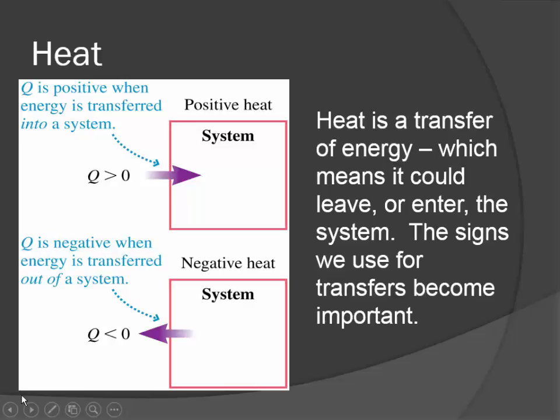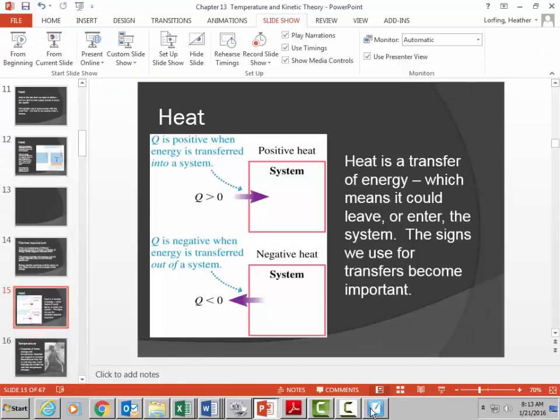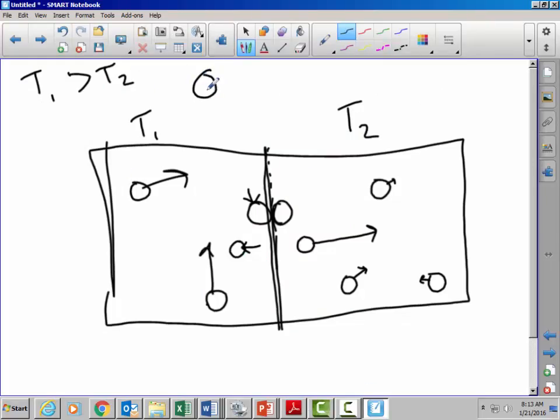So because heat is a transfer of energy, which means that it could leave or enter a system, we need to be very, very careful about the signs that we use for heat transfer. If an object or a system is gaining energy, then we say that the heat, or we use a capital Q for heat, heat is positive when energy is transferred into the system. Q is negative whenever energy is transferred out of the system. And just because of our whole energy conservation idea, it's important to note that the energy or the heat that one loses, because it's going to lose energy so its energy is negative, will be the heat that two will gain. And those will be equal and opposite.